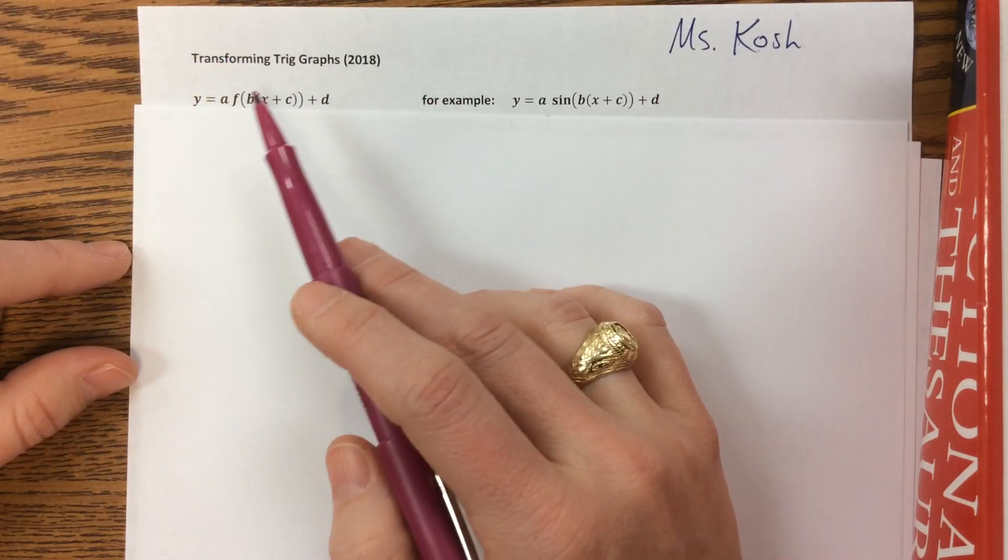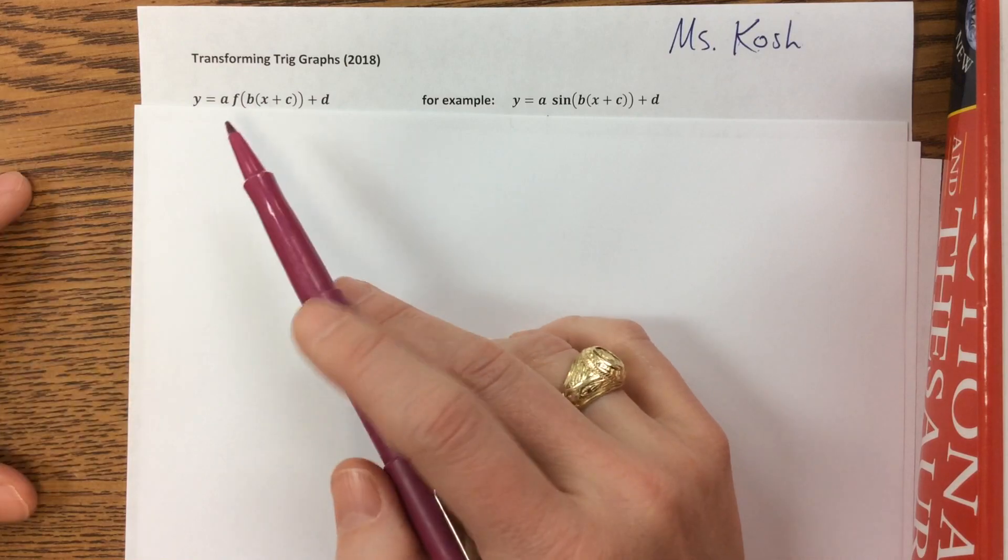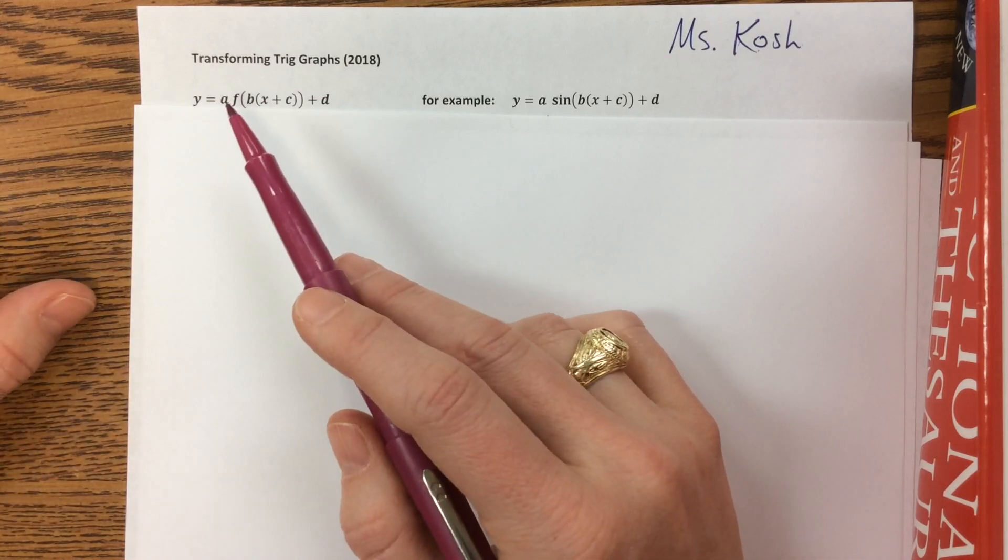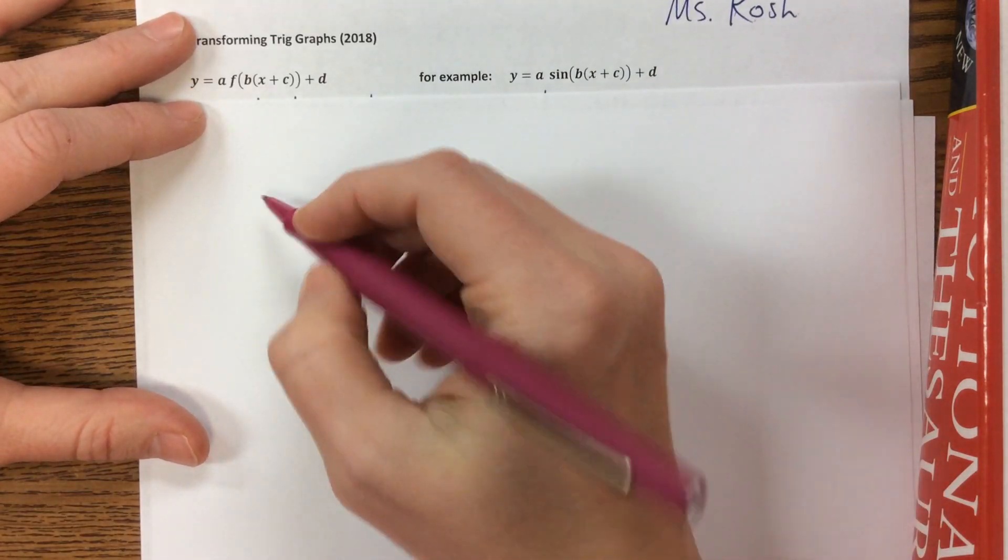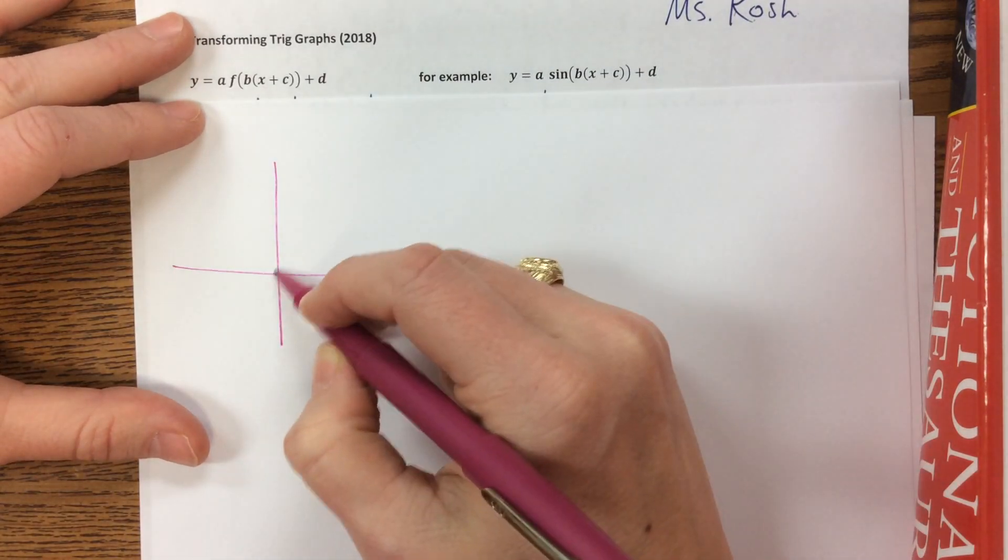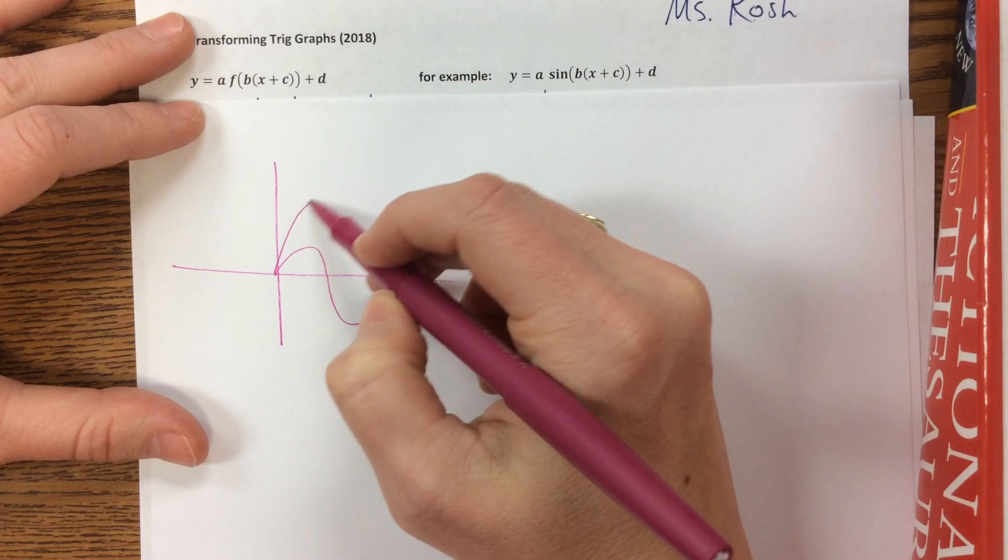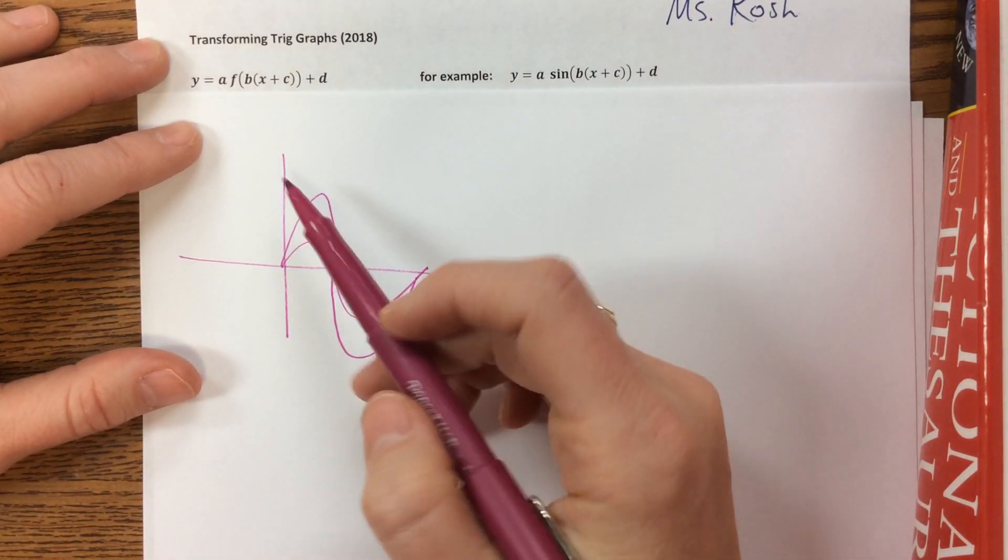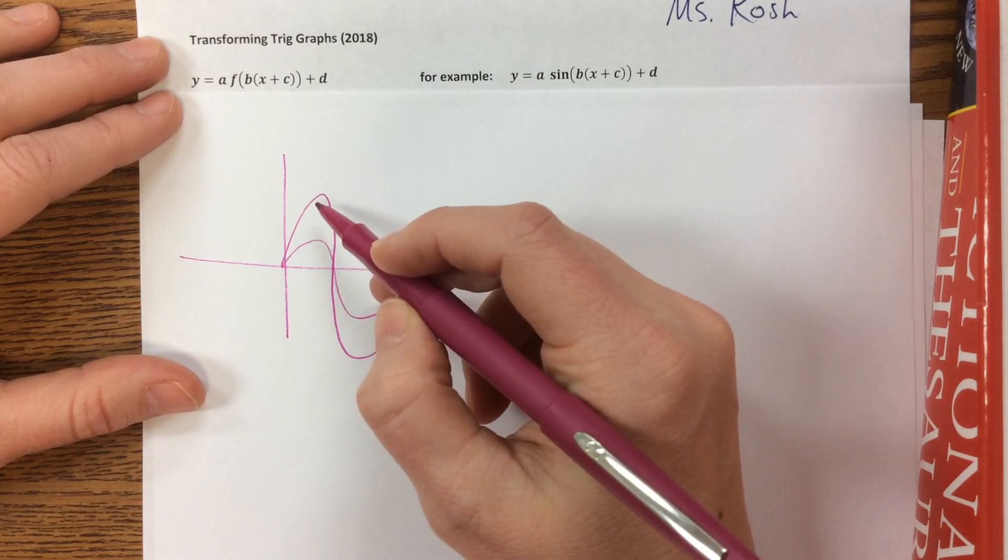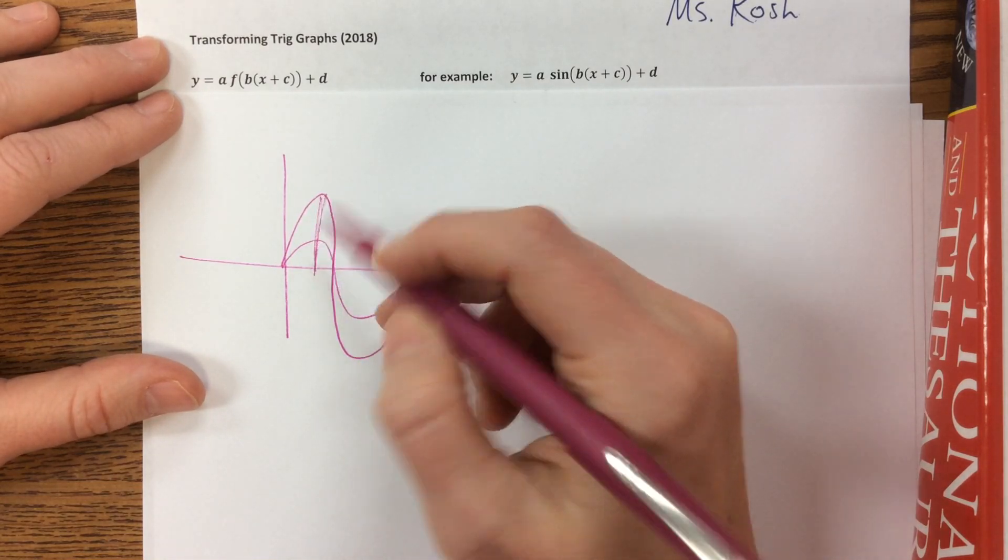So as you already know, many of you are really good at doing transformations anyway, and as you know, that a is a vertical stretch. So it would take our function, if this is our function, and it would just stretch that. So that becomes a vertical stretch, and if it's a sine graph, that vertical stretch changes this amplitude.